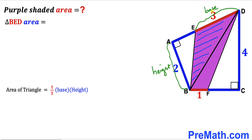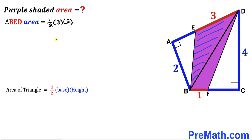Our base is 3 and our height is 2, so I can write one-half times 3 times 2. Multiplying and simplifying, that gives us 3. So the area of triangle BED turns out to be 3 square units.